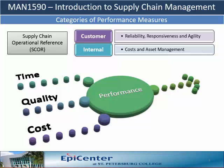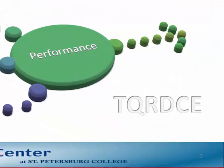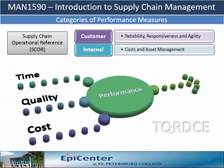In the industry, specifically within the procurement specialties, the acronym TQRDCE — which stands for technology, quality, responsiveness, delivery, cost, and environmental factors — is often used to evaluate supply chain performance.